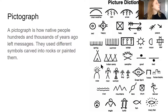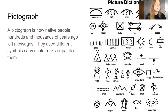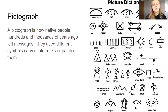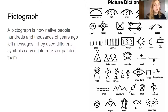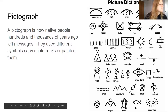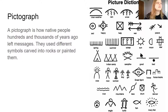So let's talk about a pictograph. A pictograph is how Native people hundreds and thousands of years ago left messages. They used different symbols carved into rocks or painted them. We even see this in artwork nowadays, or just hundreds of years ago, as they were still trying to leave messages - it was just like a way for them to tell a story. We also saw this in a little bit of a different way with the Egyptian people. So you can see here the different types of symbols that they use, and we are going to be drawing our own pictographs later and making our own artwork telling a story.